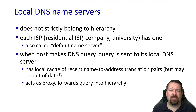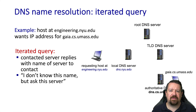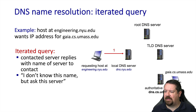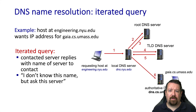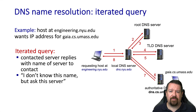Let's follow an example query through the DNS system. The DNS client contacts its local DNS server, requesting the IP address for gaia.cs.umass.edu. The NYU local DNS server does not currently know this mapping. First, it needs to find out the IP address of the .edu TLD server, and it issues this request to the root server. The root server responds back with the IP address for the TLD server, which the local resolver then queries. The TLD server responds back with the IP address of the authoritative server for umass.edu, and the local DNS server can query the authoritative server for the fully qualified domain name. When the response comes back, the local DNS resolver forwards the answer to the client. This is what we call an iterated query — the local resolver iterated through the entire hierarchy to find the answer, not the client itself.